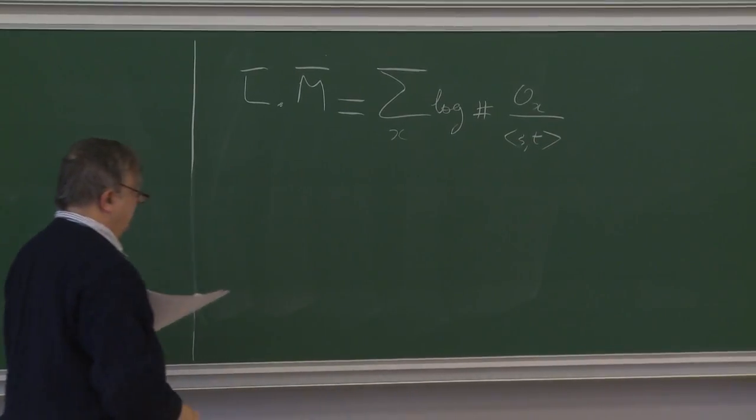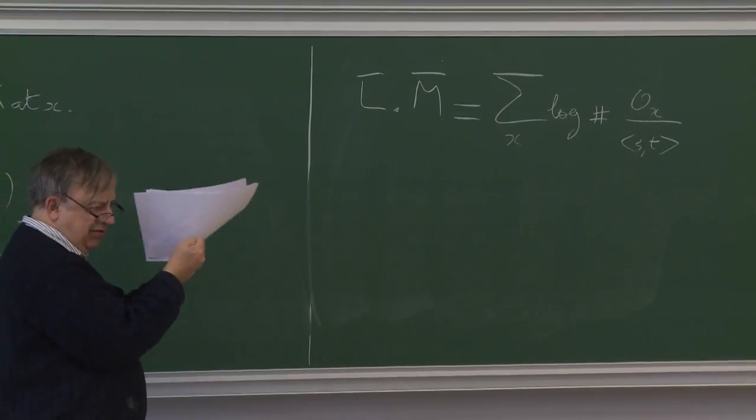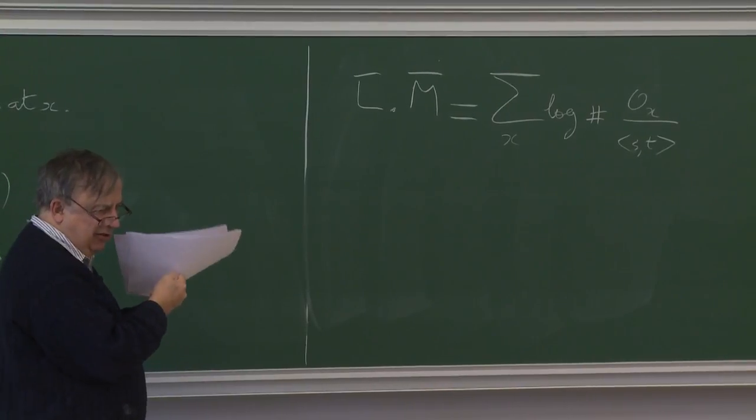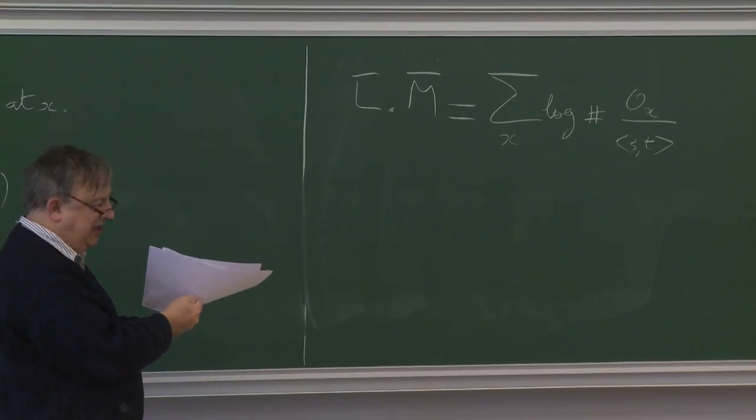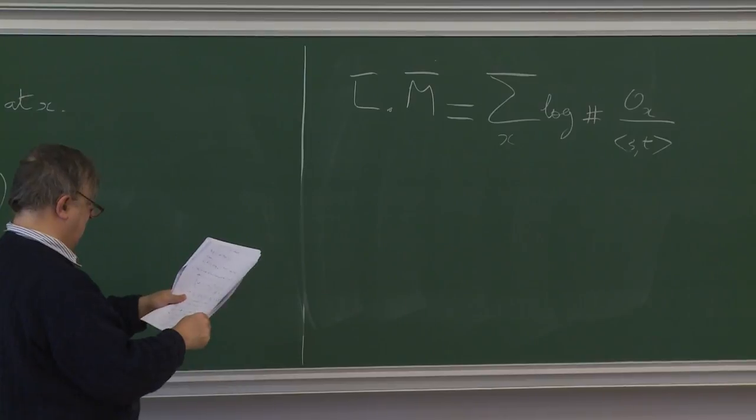So L-bar dot M-bar will have two terms: an algebraic part and an analytic part. The algebraic part will be the sum over all closed points x of the log of the cardinality of O_{X,x} divided by the ideal spanned by s and t. But as before, I have to add some counterpart at infinity so that it does not depend on the choice of sections.